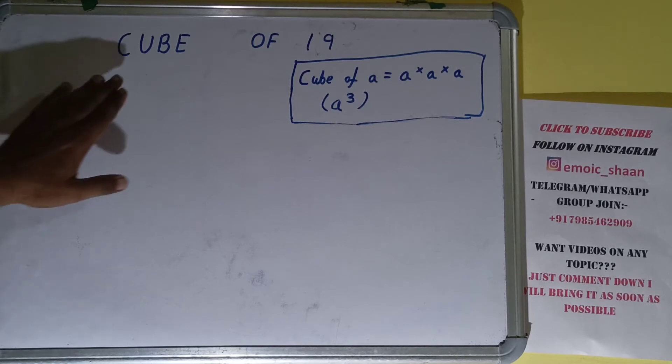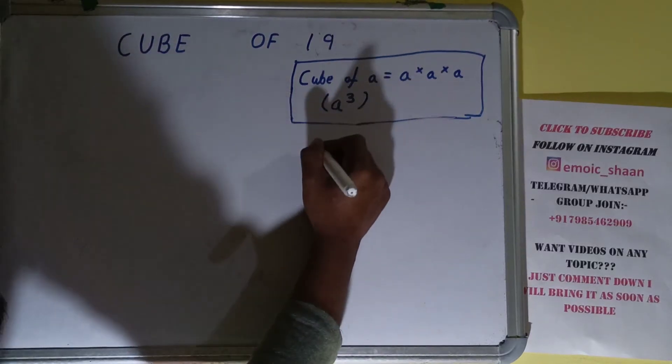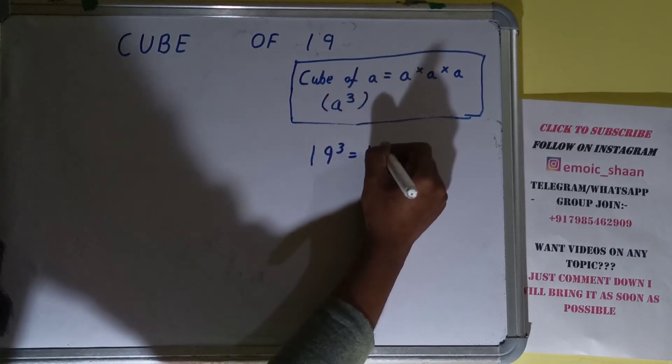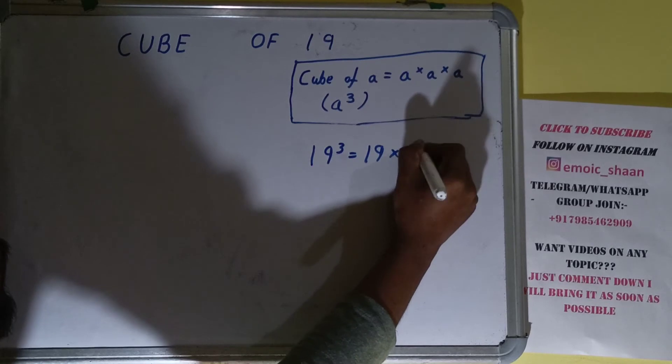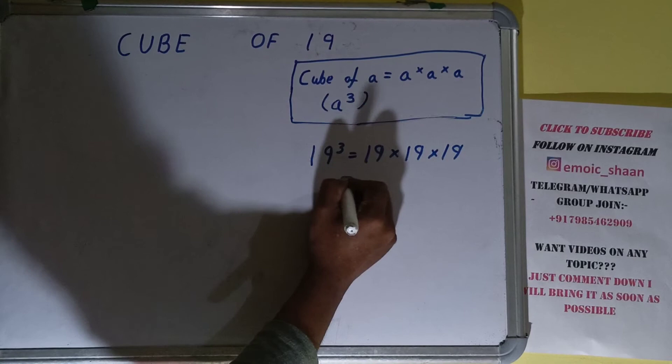Now moving on to the question, we need to find cube of 19. So what you need to do is replace this a with 19. 19 cube equals 19 into 19 into 19. Now for finding out the answer we'll do the normal multiplication.